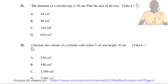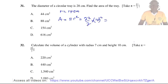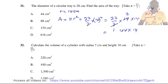Question 31. The diameter of a circular tree trunk is 28 centimeters. Find the area of the cross-section, taking π as 22/7. The diameter is 28, so the radius equals 14 centimeters. The area is given by πR²: 22/7 times 14 times 14. Cancelling 7 into 14 gives 2, so we get 22 times 2 times 14 = 44 times 14 = 616 square centimeters. The right answer is D.